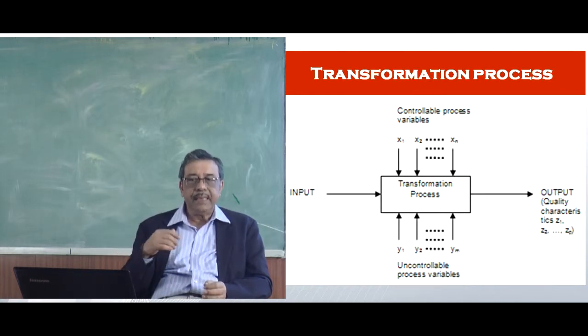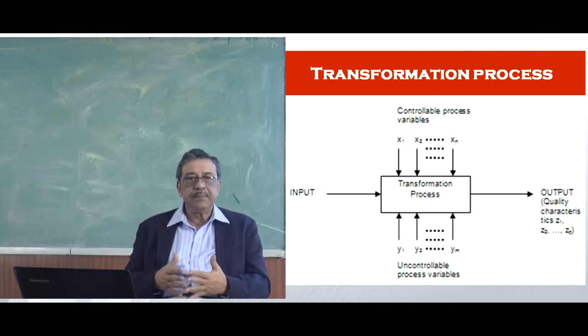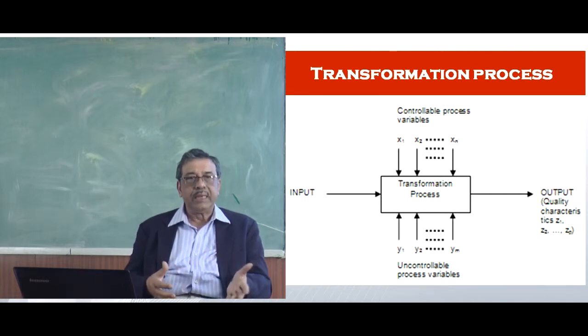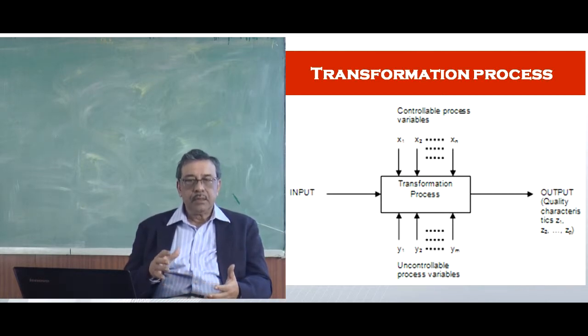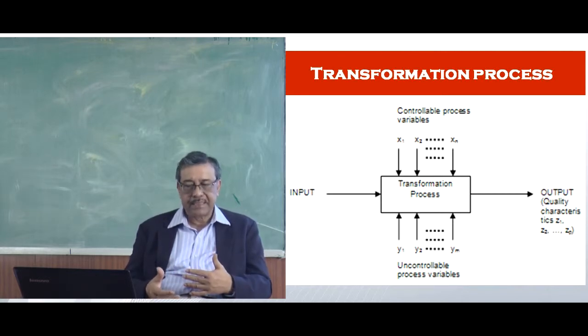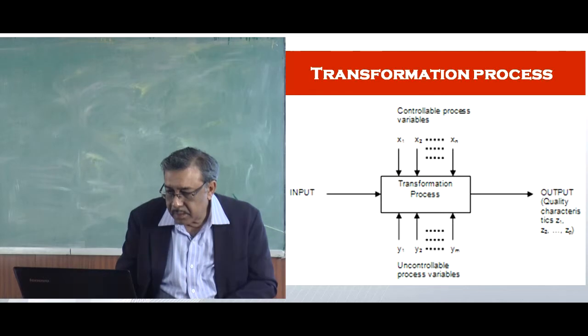How are we achieving that by changing my controllable process variables and the uncontrolled process variable is a variation in the input characteristics. Input raw material content for example, the composition of the material is not so much in our control we are taking it from the quarry we are taking it from the mine field. Those are uncontrolled process variables where the composition is not fully in our control because we are taking it from natural sources.